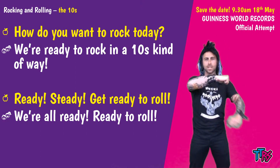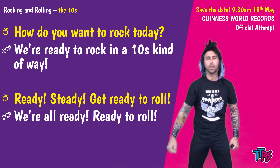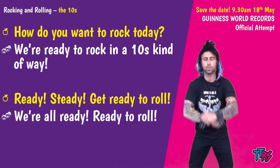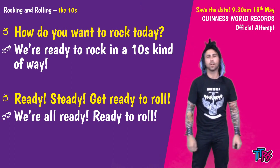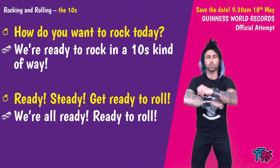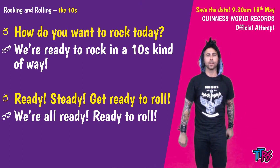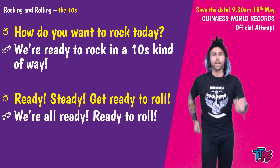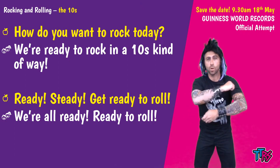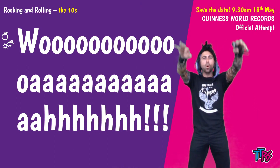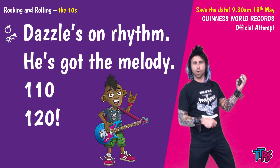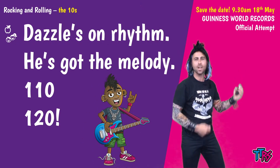My bit: Ready, steady, get ready to roll. Your bit: We're all ready, ready to roll. One more time: Ready, steady, get ready to roll. We're all ready, ready to roll. Together — my bit in yellow: Ready, steady, get ready to roll. Over to you: We're all ready, ready to roll. How do you want to rock today? We're ready to rock in a tens kind of way. Ready, steady, get ready to roll. We're all ready, ready to roll. Twinkle fingers: 10, 20, 30, 40, 50, 60, 70, 80, 90, 100. Dazzle's on rhythm, he's got the melody — 110, 120. Boom! We've been all the way through.